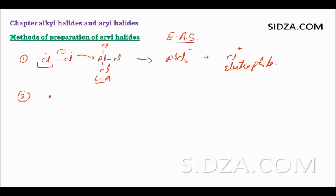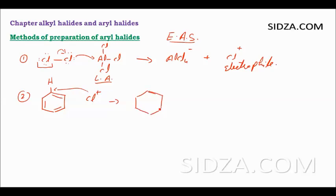In the second step, this electrophile Cl+ attacks the benzene ring. In benzene, all carbon positions are equivalent, so the electrophile can attack any carbon. Once Cl+ approaches, the pi electrons from a double bond shift toward the Cl+, forming a bond. The chlorine becomes neutral and a positive charge develops on the ortho position of the ring.